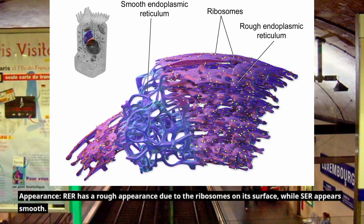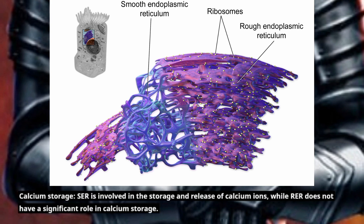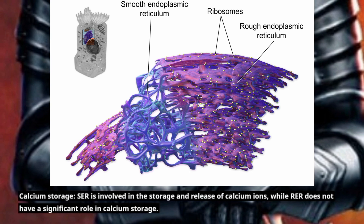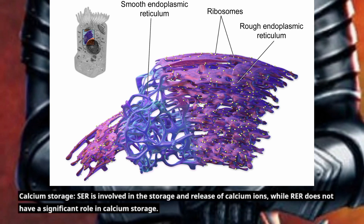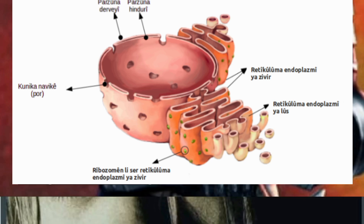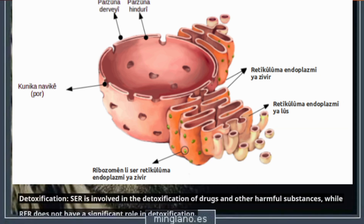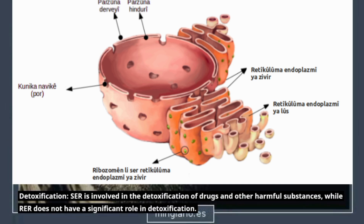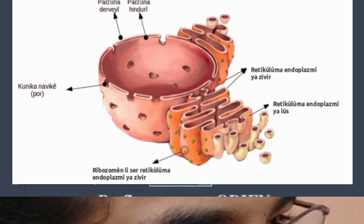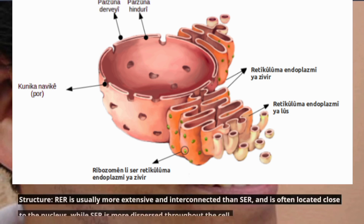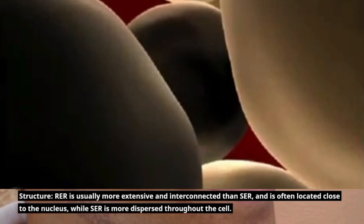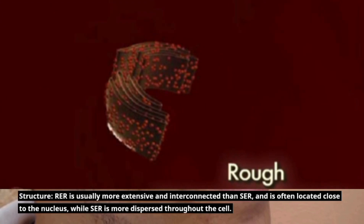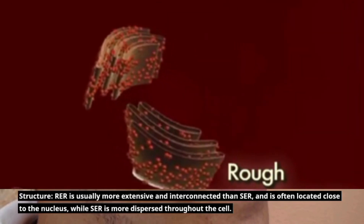Fourth, calcium storage: SER is involved in the storage and release of calcium ions, while RER does not have a significant role in calcium storage. Fifth, detoxification: SER is involved in the detoxification of drugs and other harmful substances, while RER does not have a significant role in detoxification. Sixth, structure: RER is usually more extensive and interconnected than SER and is often located close to the nucleus, while SER is more dispersed throughout the cell.